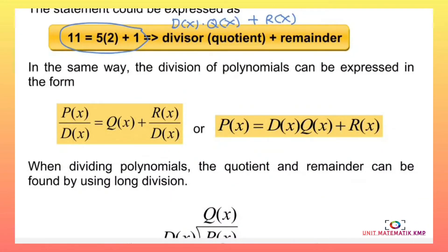In the same way, the division of a polynomial can be expressed as p(x) over d(x) equals q(x) plus r(x) over d(x). If we multiply d(x) to the right-hand side, the equation becomes p(x) equals d(x) times q(x) plus r(x).